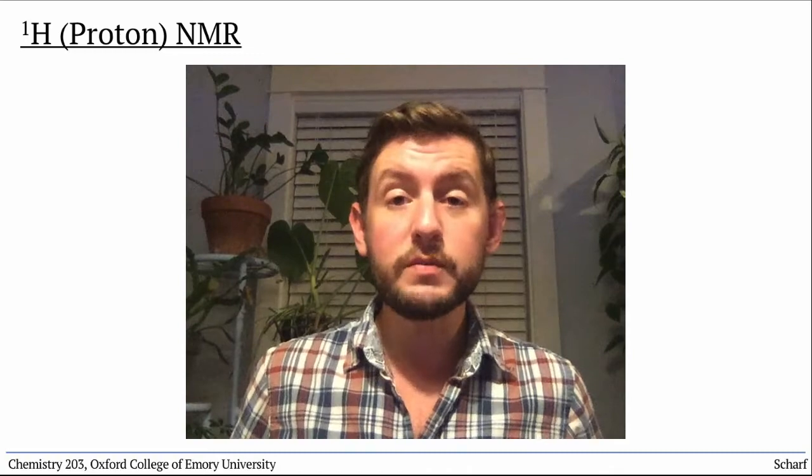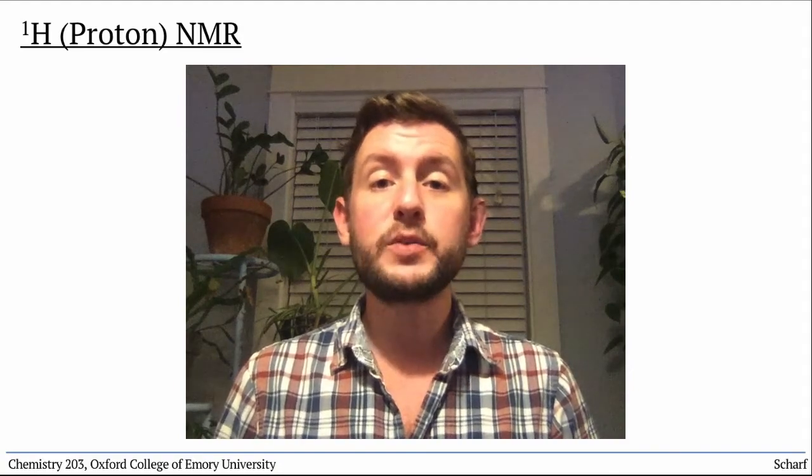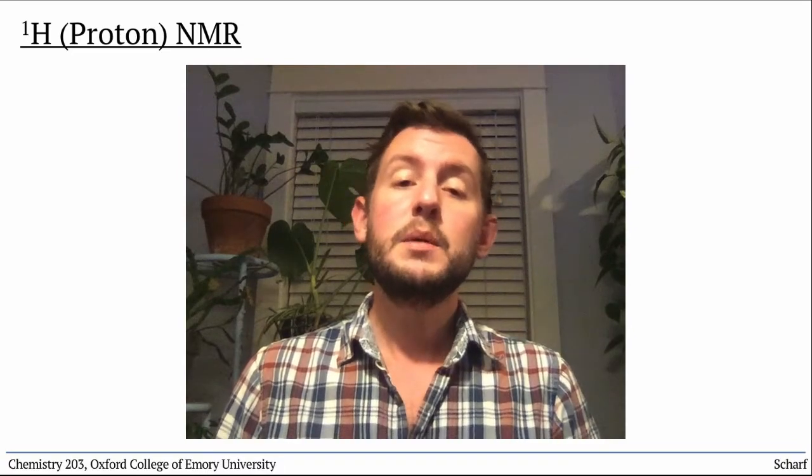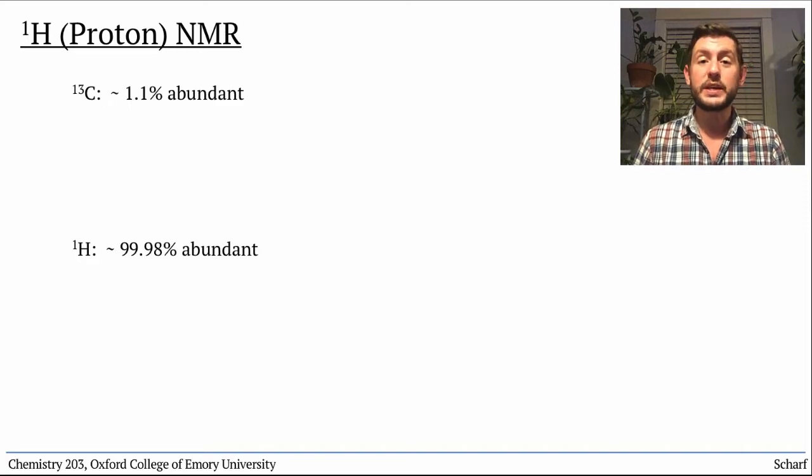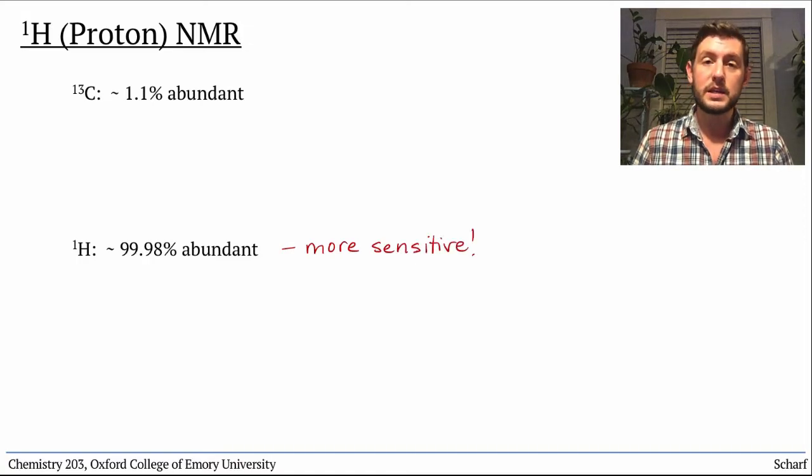Carbon-13 NMR spectroscopy gives some useful information about the carbon skeleton of a molecule. Hydrogen-1 NMR spectroscopy, usually called proton NMR, gives us even more information. Because hydrogen-1 accounts for about 99.98% of all hydrogen, proton NMR is much more sensitive than C-13 NMR.